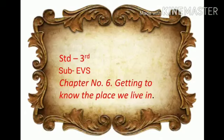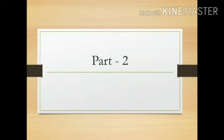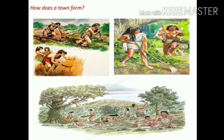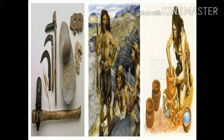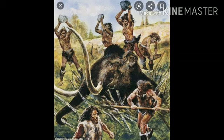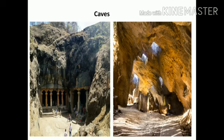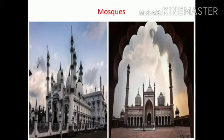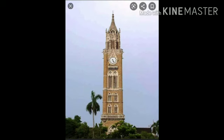Standard third subject EVS, chapter number six: Getting to Know the Place We Live In, part two. In the first part, we learned about stone age life, nomadic life — meaning people who live by going from place to place for food and hunting animals — and modern life. We learned about their food, clothes, tools, and houses.